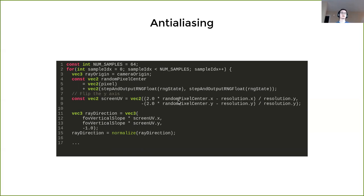If we say we have 64 samples, we will first generate a random point on that sample using the step and output RNG float algorithm. We call it twice because we want a two-dimensional point.